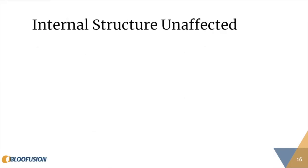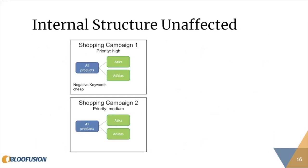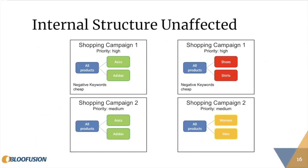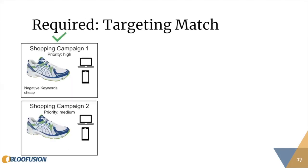You're also free in terms of internal structure. You might have two campaigns both organized by brand, but you could also have one campaign organized by product type and another by custom label. There's no reason to tie these things together — you are completely free to do whatever you want inside these campaigns, as long as the targeting matches.